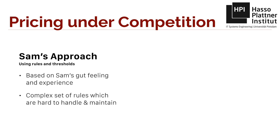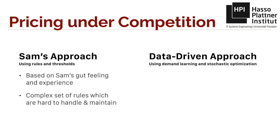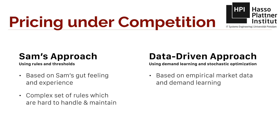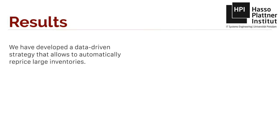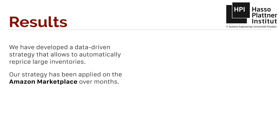In this paper, we present a data-driven approach. This approach uses collected historical market data for demand learning to accurately describe consumers' preferences. We introduce a novel stochastic dynamic model that uses estimated sales probabilities and efficiently optimizes prices in milliseconds. Our data-driven strategy allows automatically repricing even large inventories consisting of many thousand different products. To evaluate the effectiveness of our strategy in the real world, we worked together with Sam and applied our strategy on the Amazon Marketplace over several months.